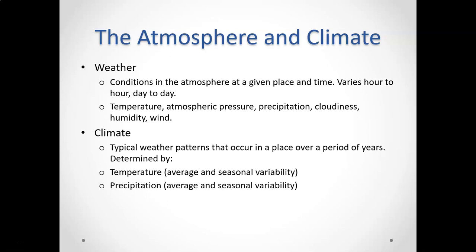Using historical temperature records, we can get a sense of what our climate is. Here in the Midwest United States, our climate tends to have warm and rainy summers, followed by cool to cold winters that can be moderately to heavily snowy. We know that if we live in Chicago we should expect snow in the winter — that's part of our climate — and we should expect some thunderstorms in the summer.